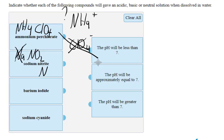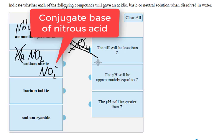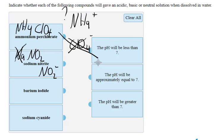NO2-, on the other hand, is a conjugate base of a weak acid. Therefore we predict the pH to be slightly above 7.